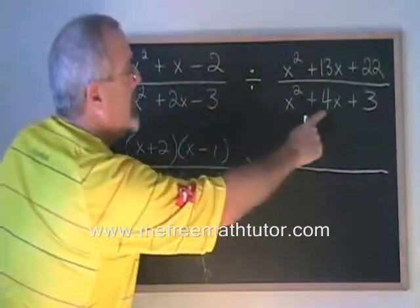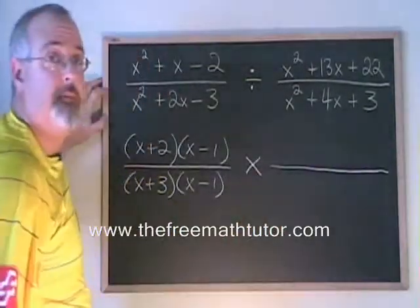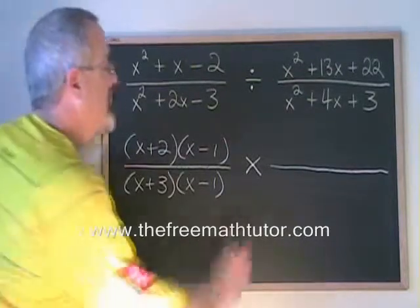So that means I'm going to factor this denominator and write its factors in the numerator here. What two numbers multiply to give 3 and add to give 4? They are positive 3 and positive 1.